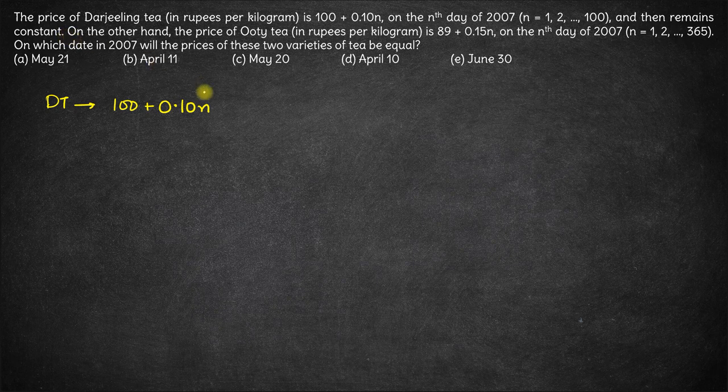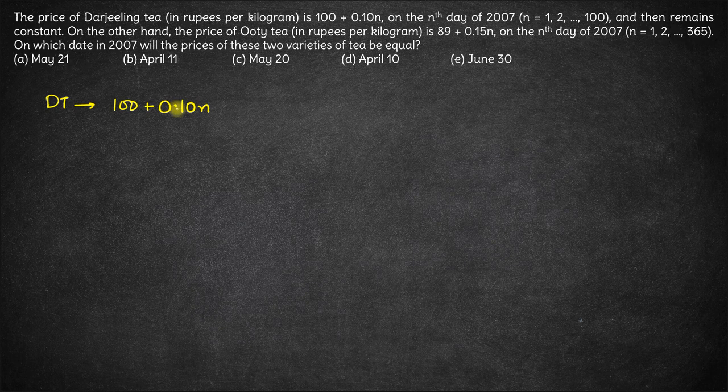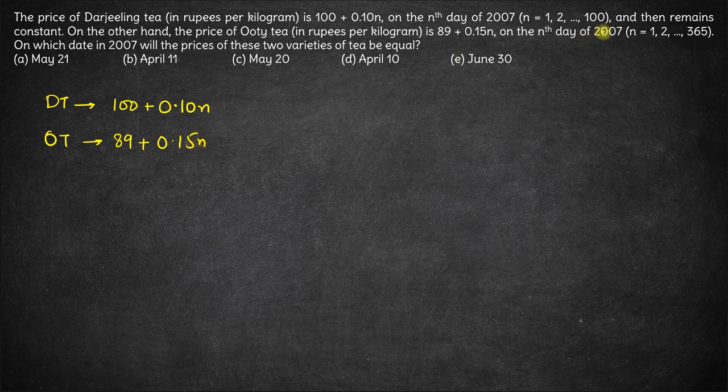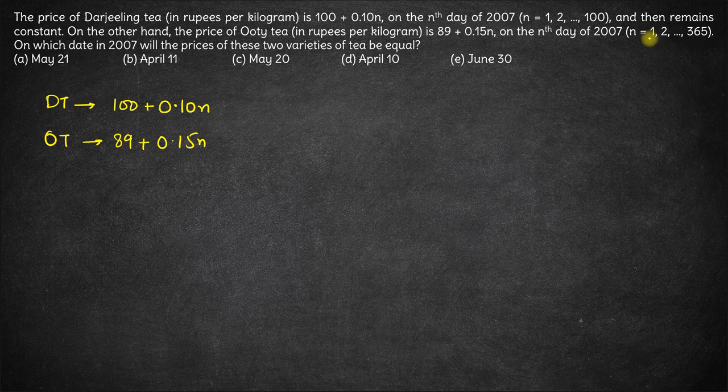After the 100th day, it remains constant. Whatever the price was on the 100th day will remain the same on further days. On the other hand, the price of OT is 89 + 0.15n, where n is the nth day of 2007. Here, n can be from 1 to 365, any value is possible. All 365 days, the price changes.